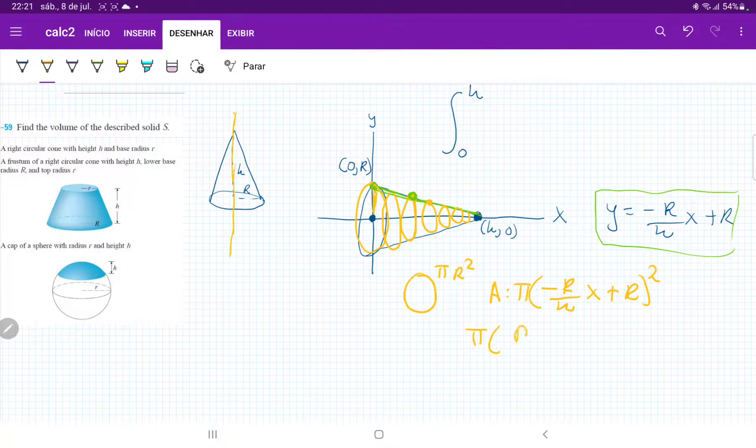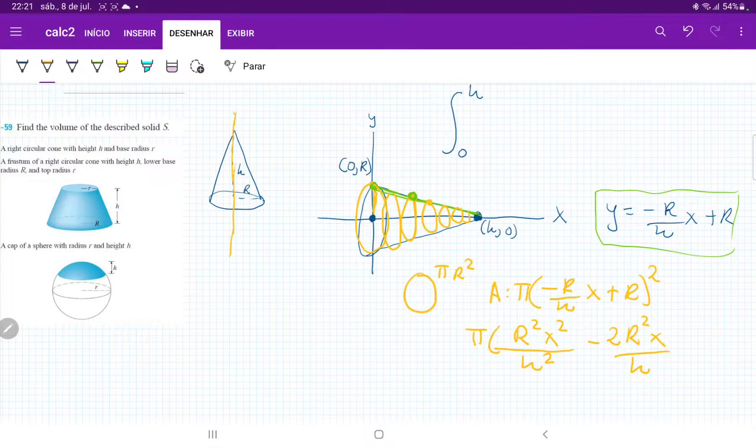plus 2, sorry, that should be minus, minus 2r squared x over h, and then plus r squared. So that's our area.